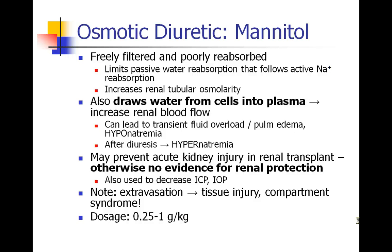Mannitol does another thing — it doesn't only work in the kidneys but actually works in the entire body. When you put mannitol into the circulation, it increases the osmotic pressure in the vasculature, drawing water out of cells into the plasma. Due to this increased intravascular volume, renal blood flow increases as well. However, when all this fluid is pulled out of cells into the circulation, patients can become a little fluid overloaded — which can put someone with a bad heart into pulmonary edema or congestive heart failure. Also, because free water is coming into circulation, they can become transiently hyponatremic, diluting the sodium in their circulation. Once they've diuresed out all of this free water, patients can become a little hypernatremic.